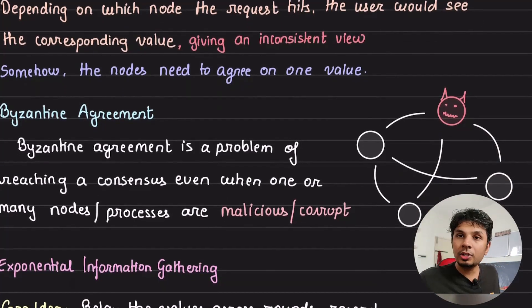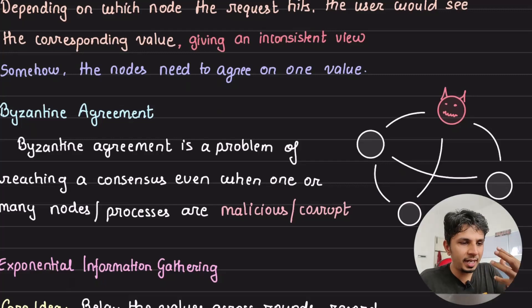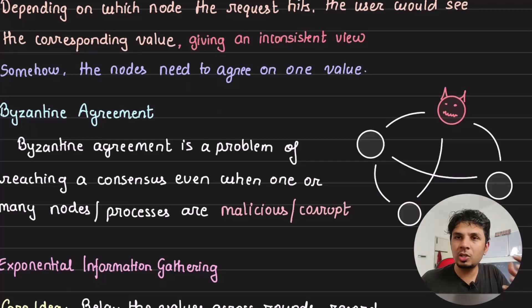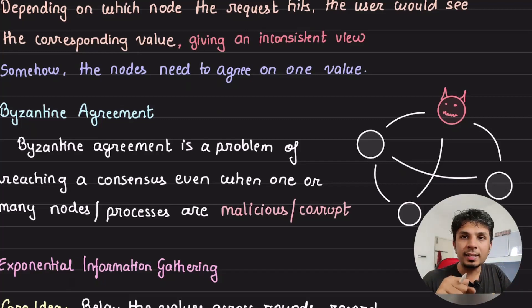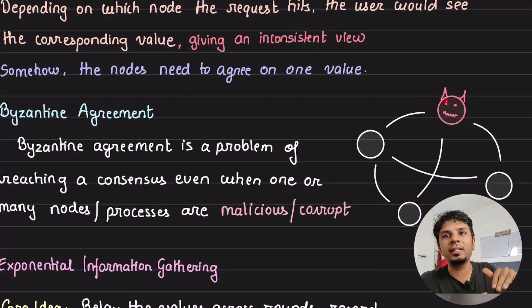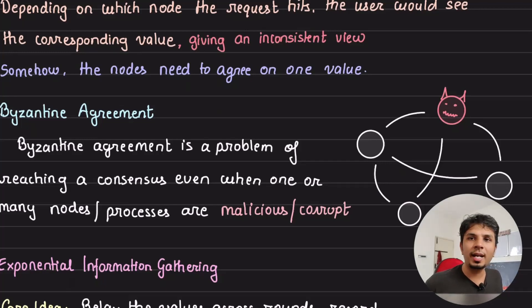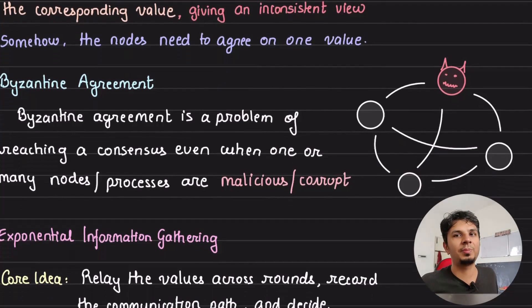Up until now, we always assumed that the nodes are genuine, meaning the value they are claiming may be lagging in time, they may be slow, they may have crashed, they may have some corruption — but they are all genuine in nature. What Byzantine agreement says is that a node may be malicious, deliberately trying to ruin the correctness of the system. No matter what the node deliberately says — say the value is 5000, some random number — how can we reach consensus even in the presence of such nodes in the distributed network?